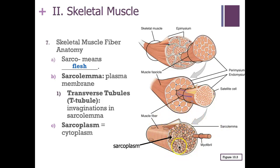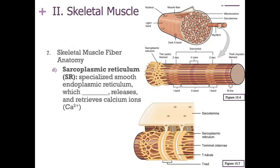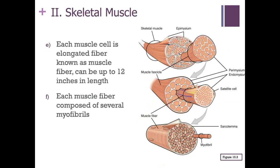The sarcoplasmic reticulum is a special name for the smooth endoplasmic reticulum of the muscle cell. It stores, releases, and retrieves calcium ions within the muscle cell. These parallel tube-like structures sit alongside the transverse (T) tubules. The arrangement of the sarcoplasmic reticulum on either side of a T-tubule is called a triad.